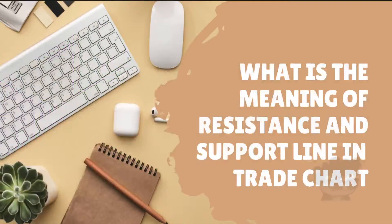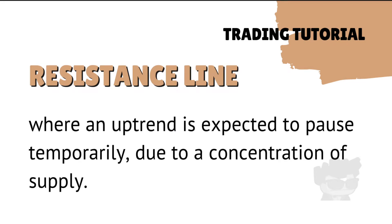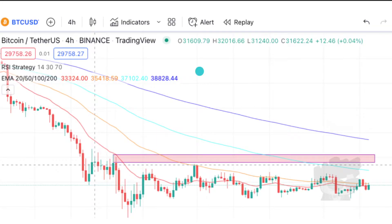Bago ang lahat, ano nga ba ang meaning ng resistance and support line sa trading chart? Ang resistance line — ito yung where price is expected to pause temporarily due to concentration of supply. Sabi ito ni Google. Meaning, ito yung madalas na mataas na value na nakikita natin. Ibig sabihin, ito yung pinaka-mataas — pag nauntog na, baba na yan.